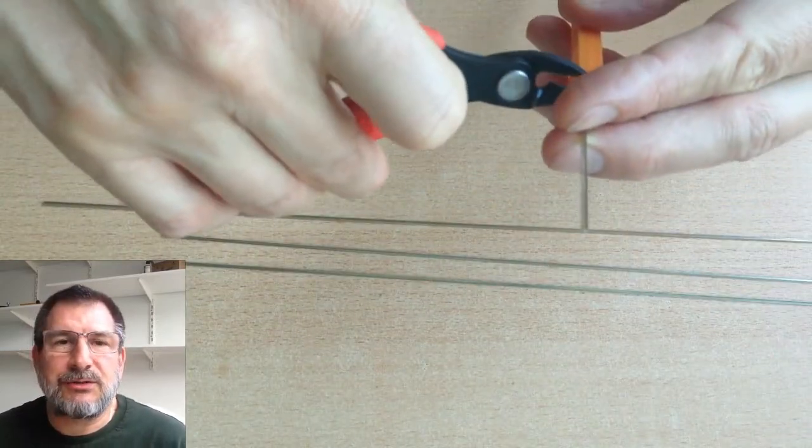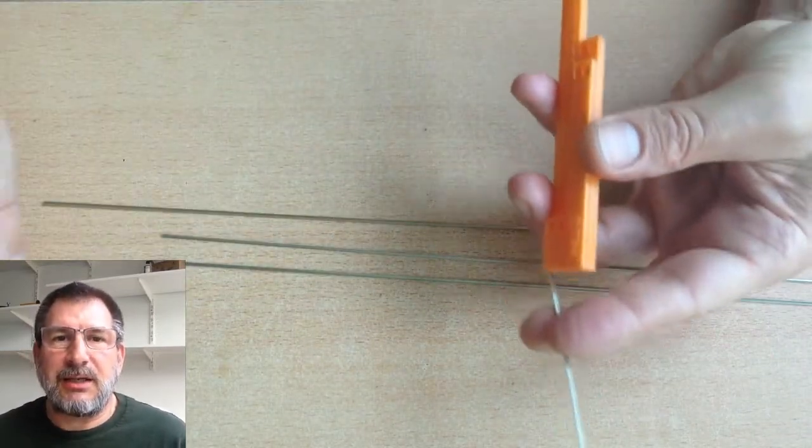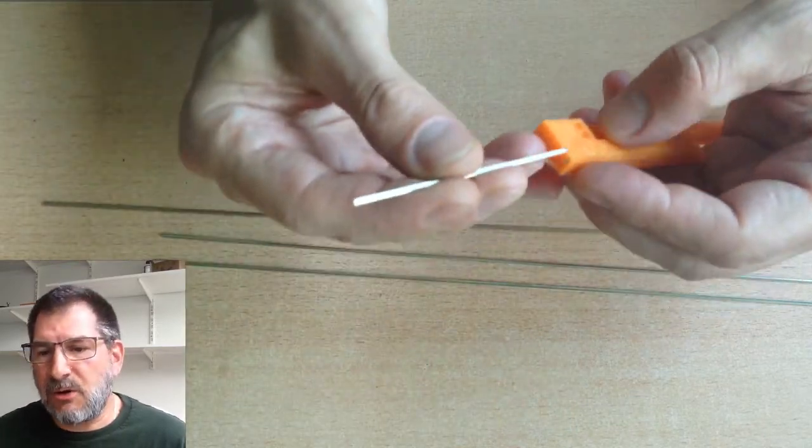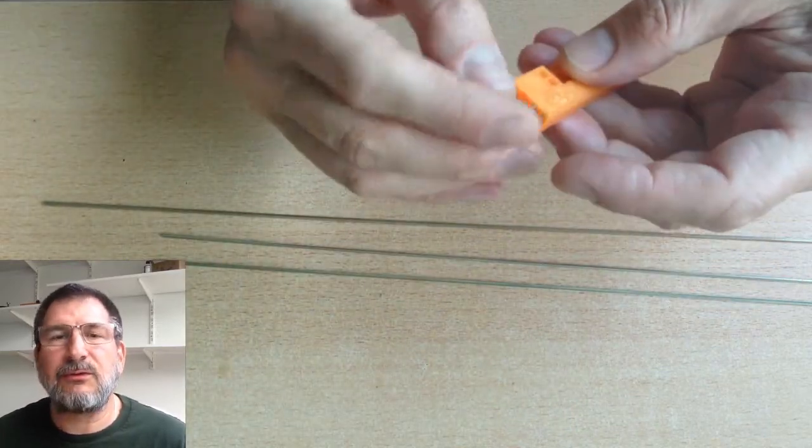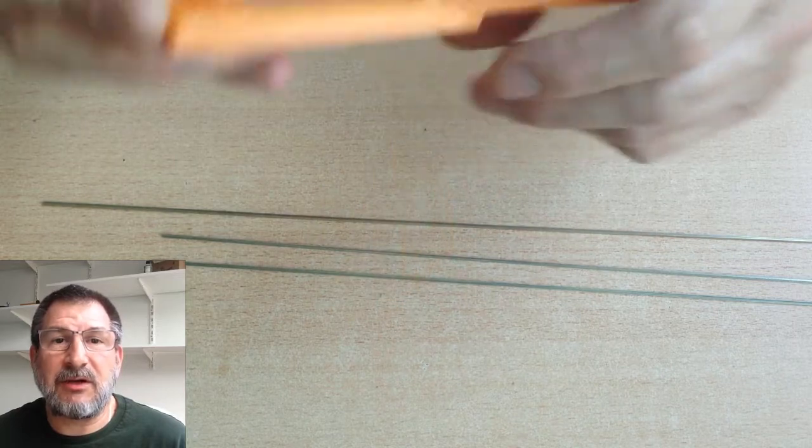Basically, measure out your rails so that you try not to waste any. In this case I'm using a small piece of rail for the two frogs because it basically fit almost perfectly.